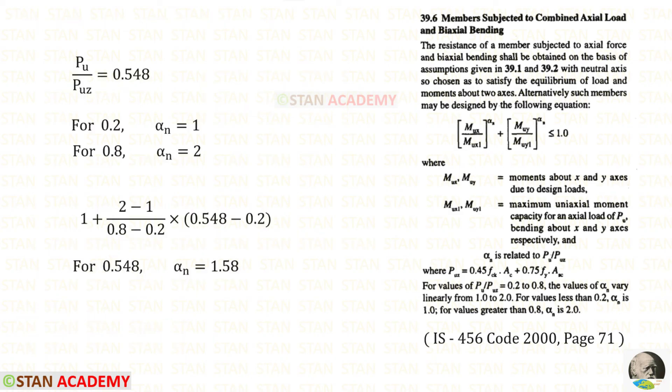Now, we are going to find alpha n. When Pu upon Puc is 0.8, we can keep alpha n as 2. But we need to find alpha n for 0.548. We can do interpolation. The smaller value is 1. So, 1 plus the bigger value minus the smaller value and then 0.8 minus 0.2 into the value for which we have to find alpha n. That is 0.548 minus 0.2. In this way, for 0.548, we will get alpha n as 1.58.